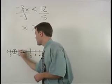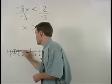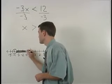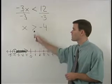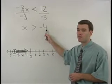Next, we draw an arrow going to the right on our number line to represent all numbers greater than negative 4.